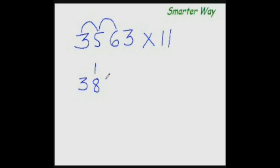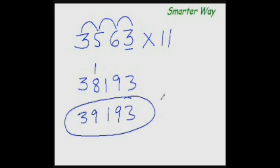Simple. Just carry forward 1 here, write 1 here. Now 6 plus 3 is 9, and copy this 3 as it is. So the answer would be 38 plus 1 is 39,193. This is your answer.